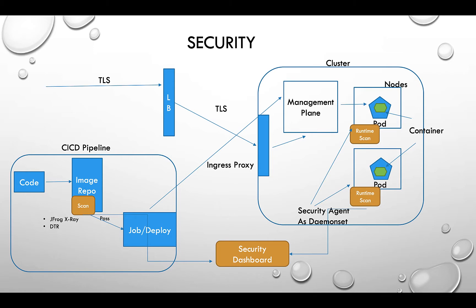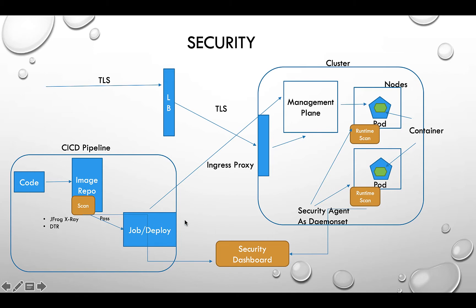The first thing is a static scan. A scan can be done at the image repo level — as soon as the image gets pushed, an automatic scan will start and check the image layer by layer for any vulnerabilities. You can set up assurance policies so that if your image doesn't have any criticals or majors, only then it can pass to the next stage — the CD deployment, done by Jenkins, Bamboo, or whatever tool you're using.